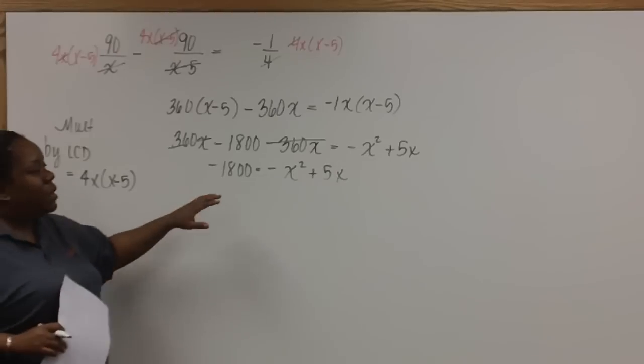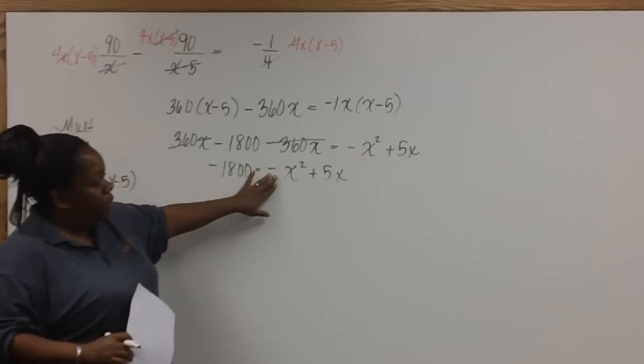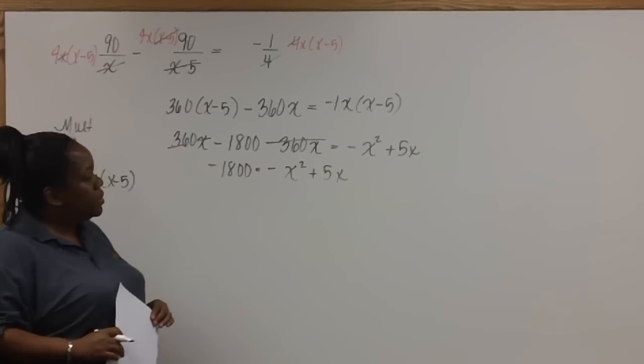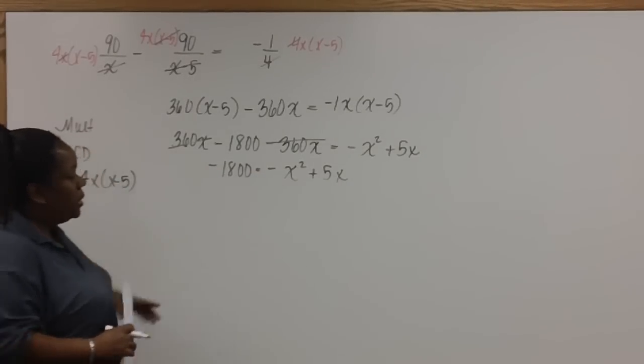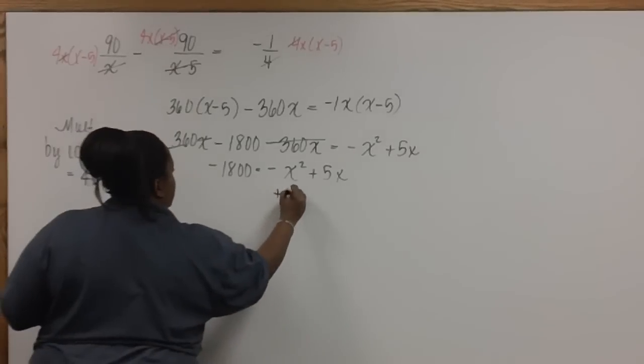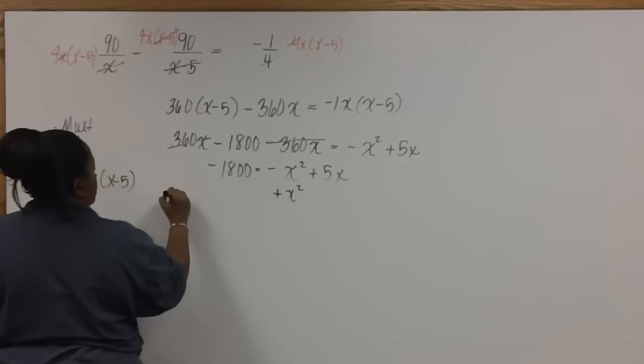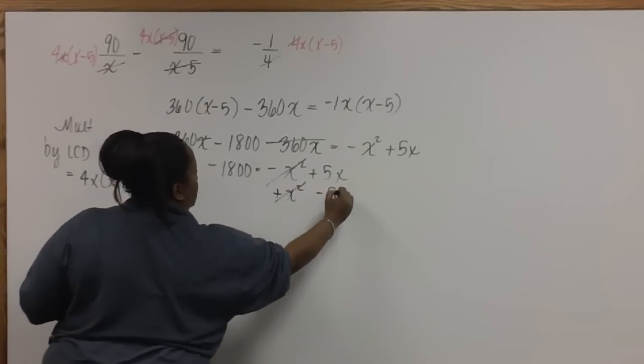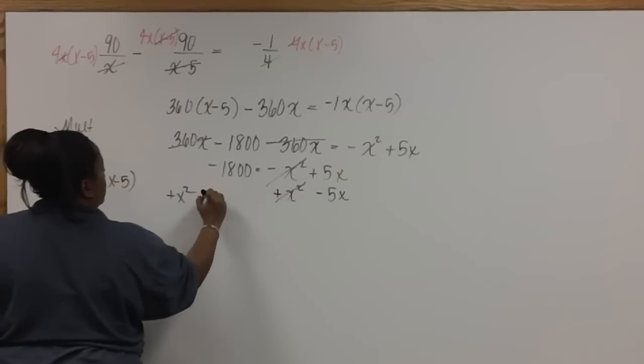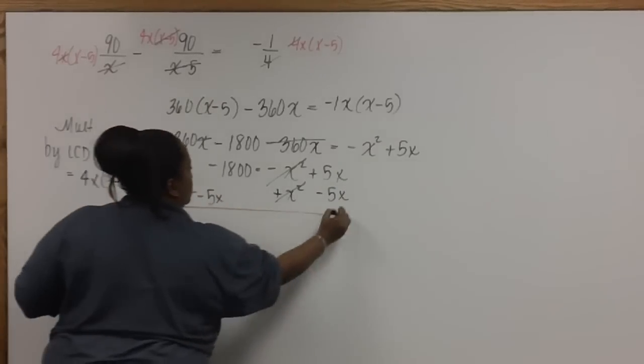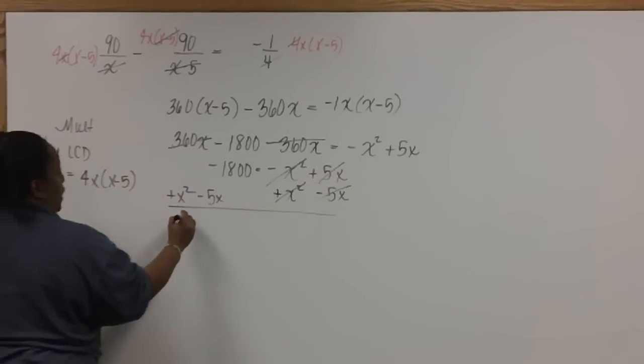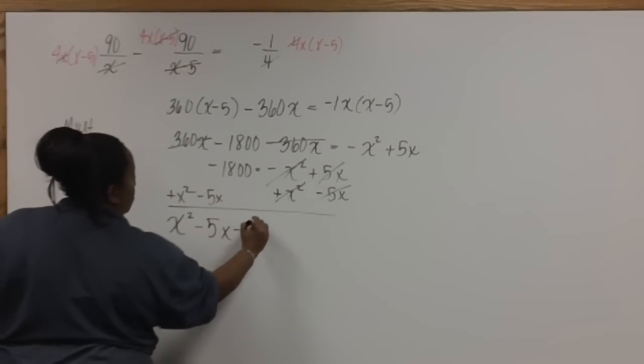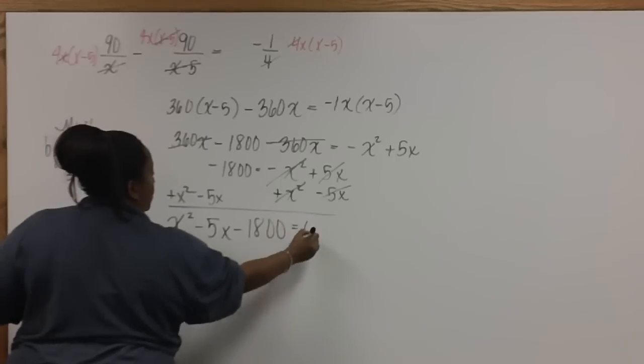Now, because I like for my squared term coefficient to be positive, instead of adding 1,800 to both sides, I'm going to add X squared to both sides. So that now we have X squared minus 5X minus 1,800 equals 0.